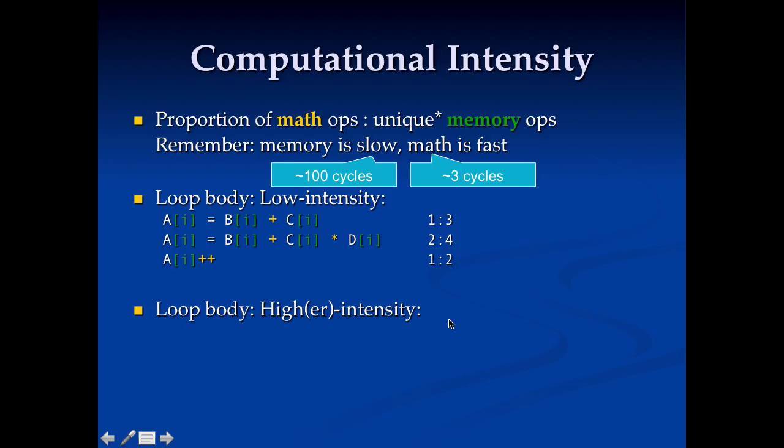Let's look at some higher intensity loops here. So say I'm doing something like this, A of I times A of I, and I'm storing it in a temporary variable that is a variable in a register. Here I've got one memory location operation, which is load A of I, and one, two math operations.